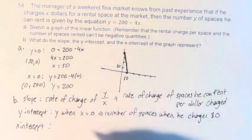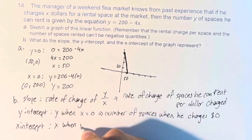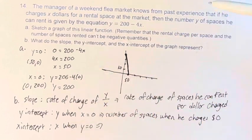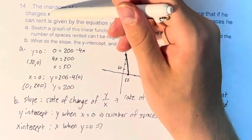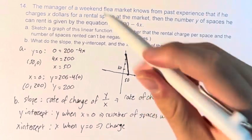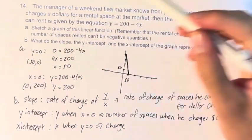The x-intercept is the opposite. It's x when y is 0. It is the charge, x, when the number of spaces he can rent is 0.